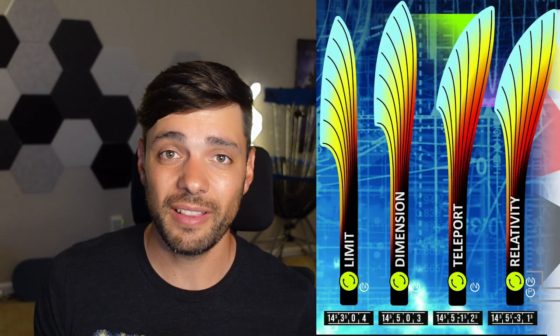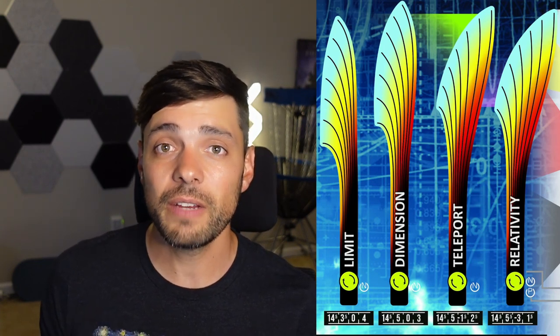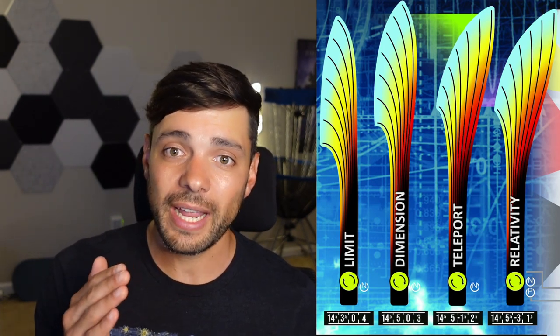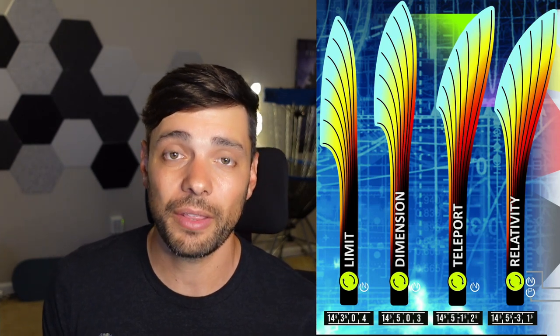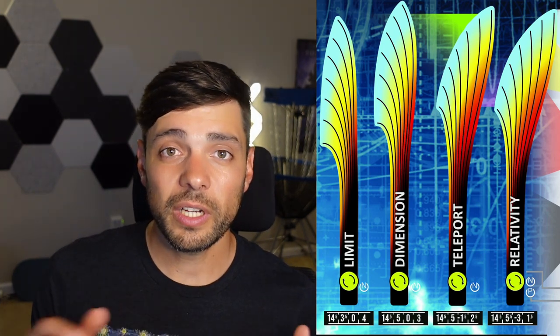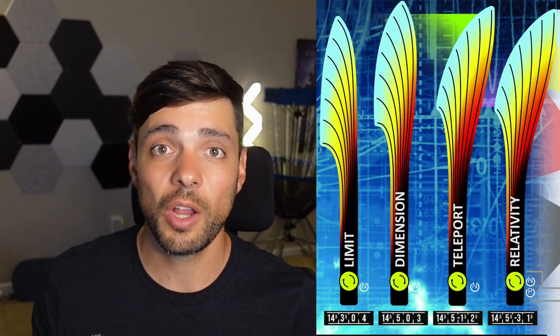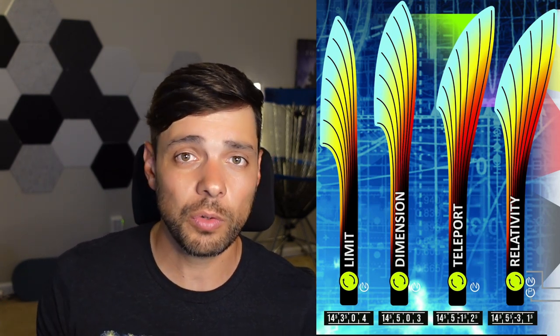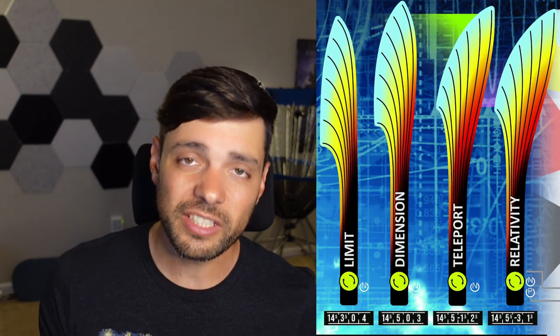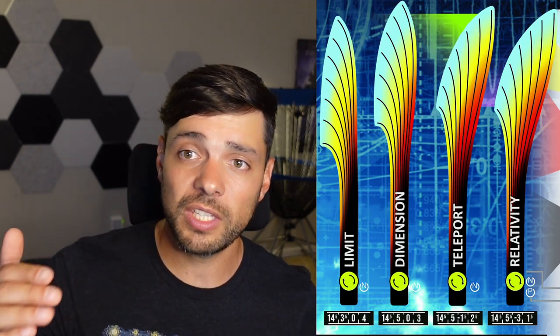The leftmost disc — the Limit — is considered a very, very overstable disc. If you look at it, it doesn't ever go to the right-hand side; it's always going to finish left if you're throwing a right-hand backhand throw. Then if we look at the rightmost disc — the Relativity — that's what you would consider an understable disc where it fights its natural tendency to go left with a right-hand backhand. If you throw it a little slower, it still finishes left. But if you throw it with more power, it starts finishing further and further to the right.